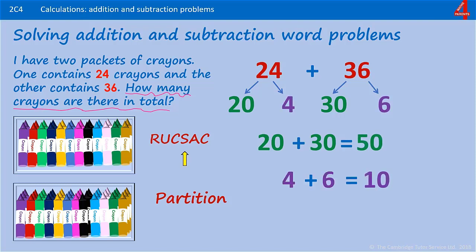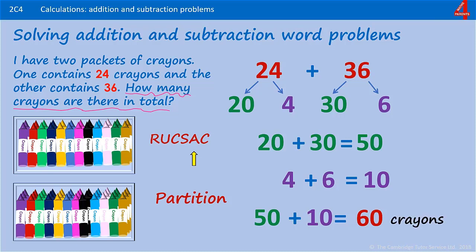50 add 10, that's 60. Make sure we are answering the question — we have 60 crayons in total. And just check that 60 looks about right for 24 and 36.